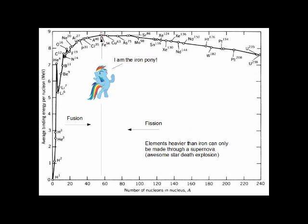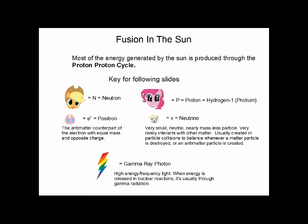So, when this point is reached, the star collapses and, depending on its size, may undergo a supernova explosion. So, this means that elements heavier than iron can only be created through supernovae.